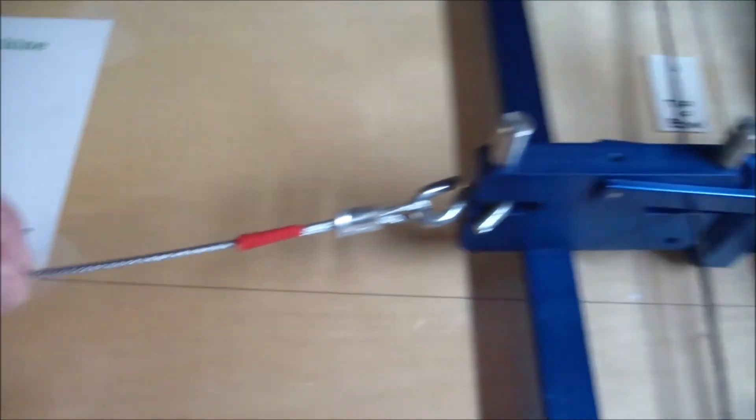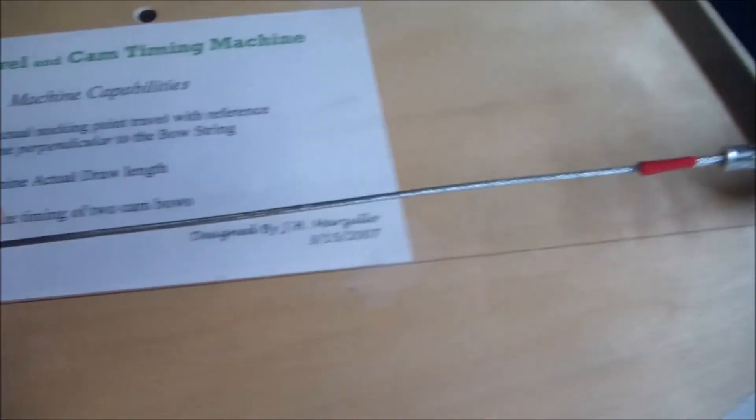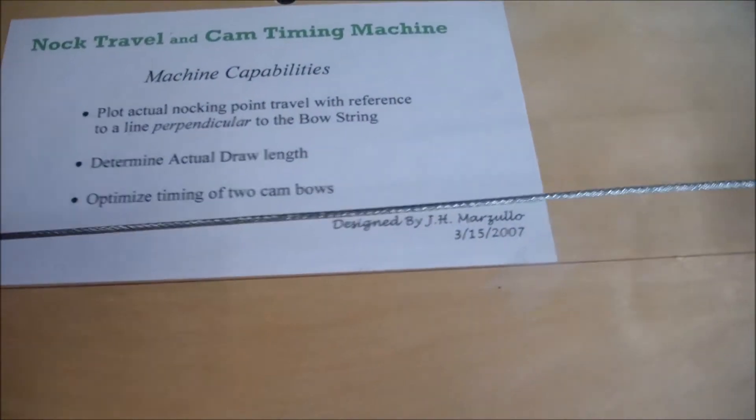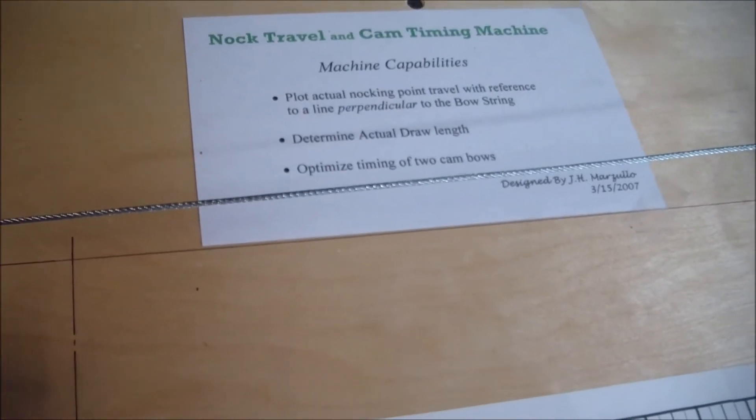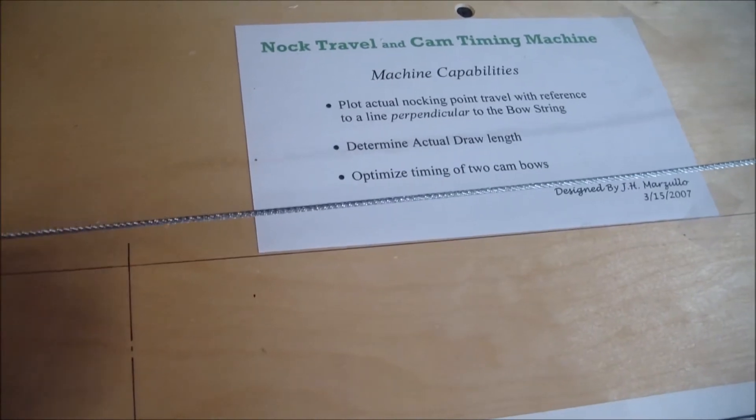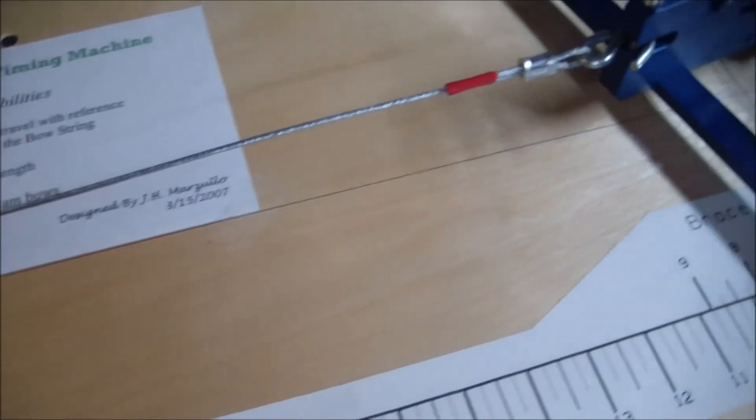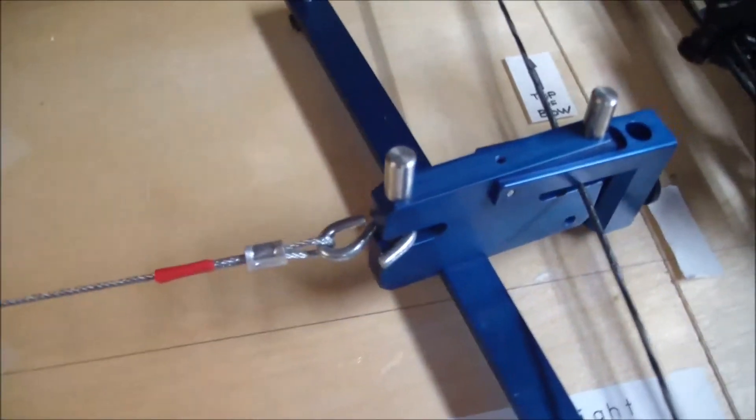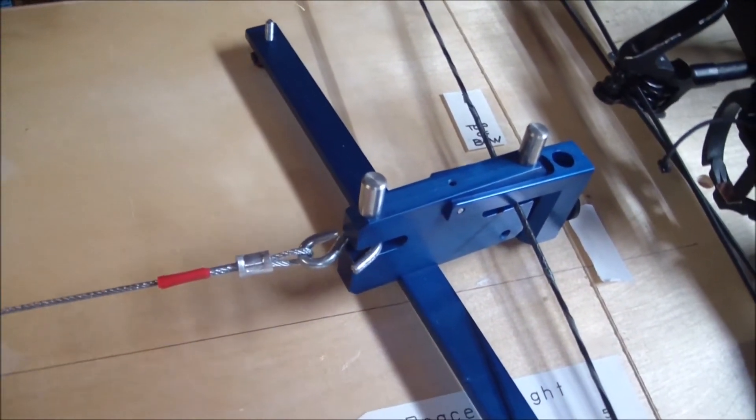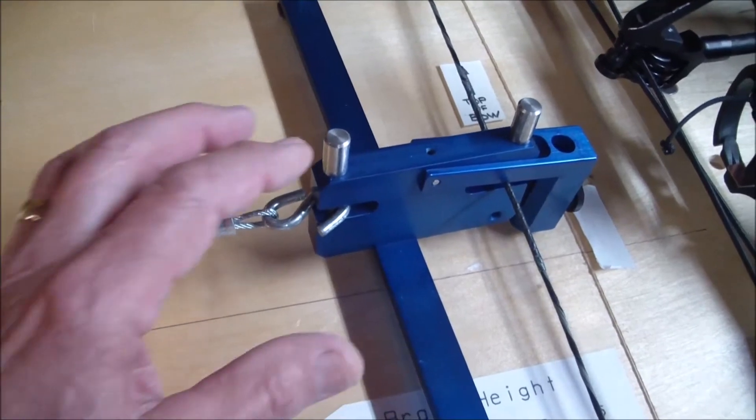So if it goes up and down, however it goes, you'll see that in the plot. So once we've got that done, we've gone from brace height to full draw, we'll see what the knock travel does, and we have to see what it does with regard to a reference line.